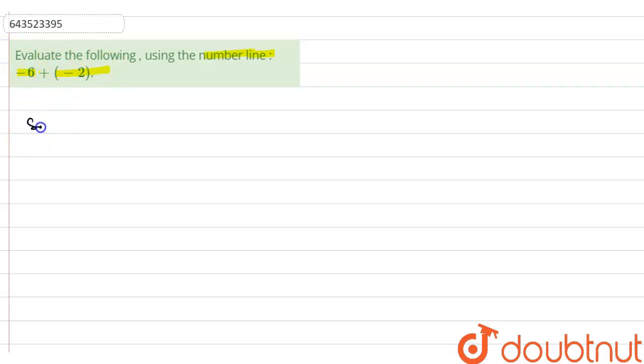Let's solve this question. First of all, we will write this question: minus six plus in bracket minus two. As you know, when we multiply plus and minus we get minus, so it's minus six minus two.